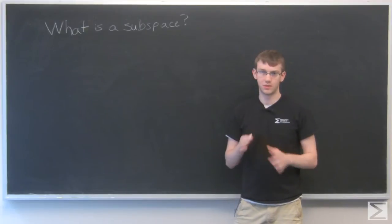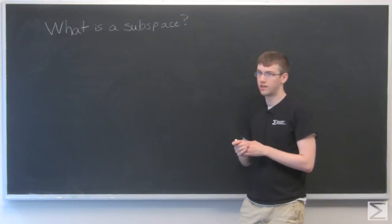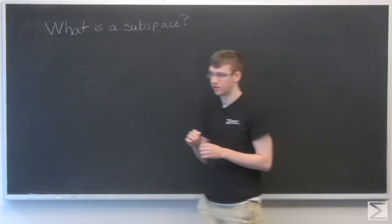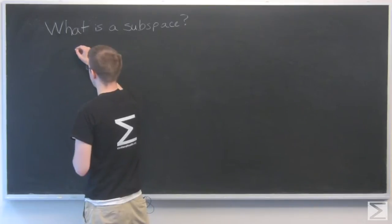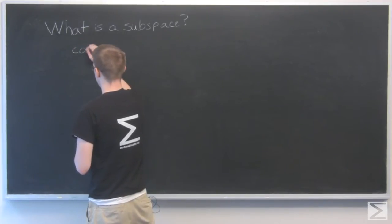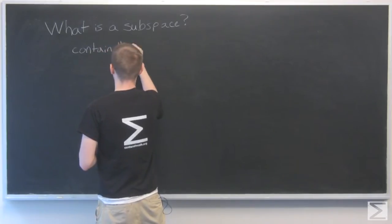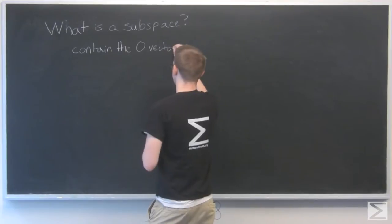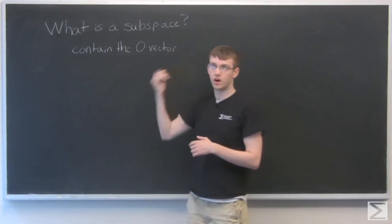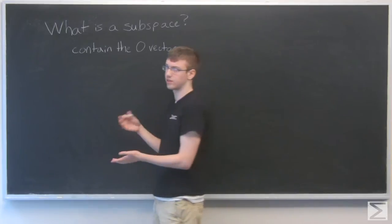A subspace is going to be a set of vectors in Rn, that means they have n components, and it obeys three rules. So it's a set of vectors, and this set of vectors will contain the zero vector. So if you're in Rn, that means your vectors are n components long. You have just the vector that's everything in zeros.